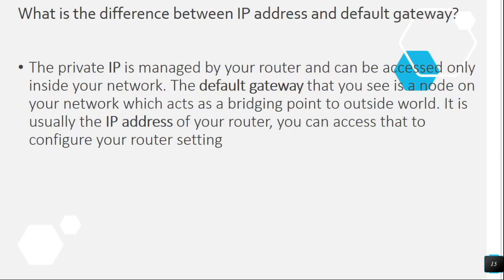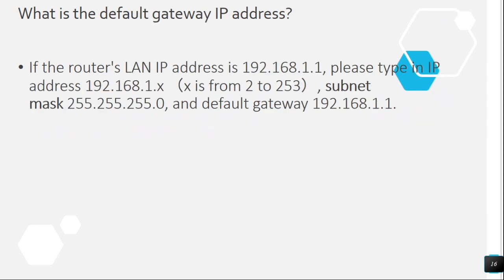Question 14: What is the difference between IP address and default gateway? The private IP is managed by your router and can be accessed only inside your network. The default gateway that you see is a node on your network which acts as a bridging point to the outside world. It is usually the IP address of your router, and you can access it to configure your router settings.